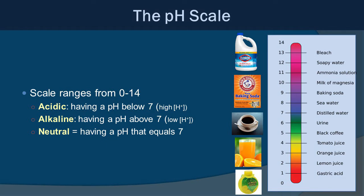The pH scale ranges from 0 to 14: 0 is the most acidic, with a pH below 7 having a high concentration of hydrogen ions; alkaline is above 7 with lower concentrations of hydrogen ions; and neutral is exactly 7. Looking at the scale, bleach is 13 — very alkaline. Milk of magnesia and baking soda are around 9. Seawater is 8, slightly basic. Distilled water is neutral at 7. Urine is pH 6, black coffee is 5, tomato juice 4, orange juice and lemon juice around 3, and gastric acid is 1.